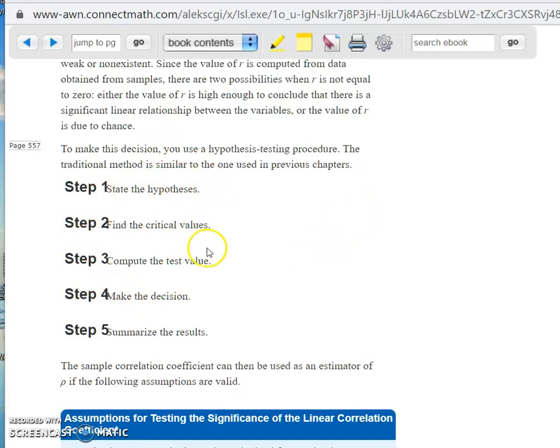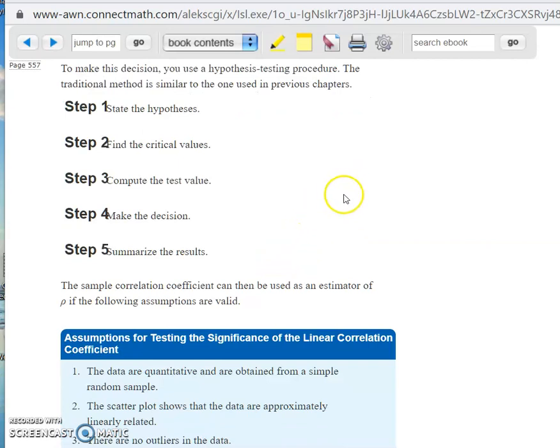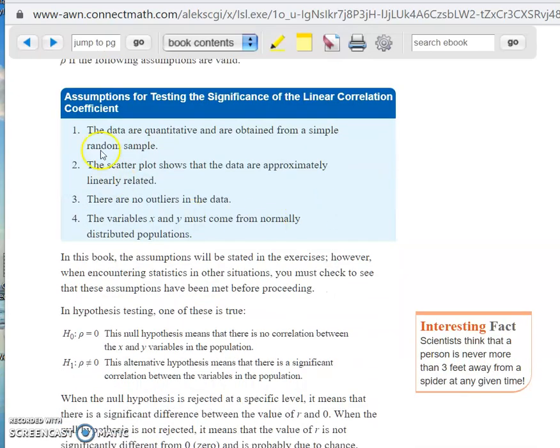It's the same process as before. You state the two hypotheses, find the critical values, compute the test value, make a decision, and then summarize the results. So I'm going to let you read this on your own.